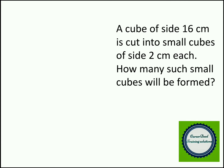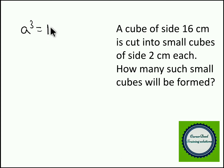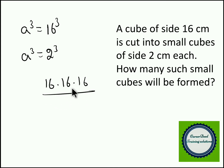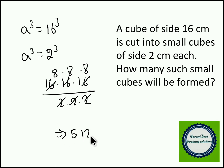Now try to pause the video for 5 to 10 seconds and answer this question. A cube of size 16 centimeters is cut into small cubes of size 2 centimeters each. How many such small cubes will be formed? Volume of big cube divided by volume of small cube: that is 16³ divided by 2³, which is 16×16×16 divided by 2×2×2. Canceling gives 8×8×8, which equals 512. So there will be 512 small cubes formed when you cut the 16 centimeter cube into 2 centimeter pieces.